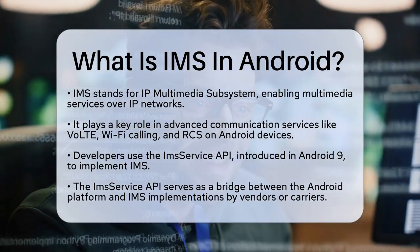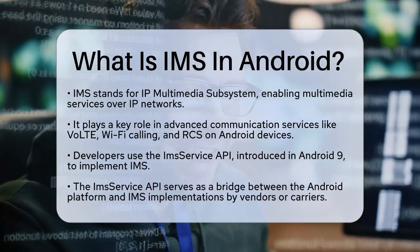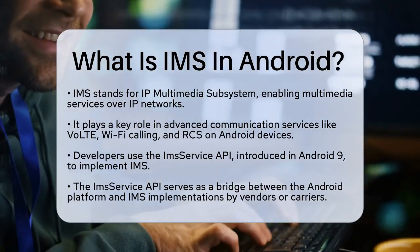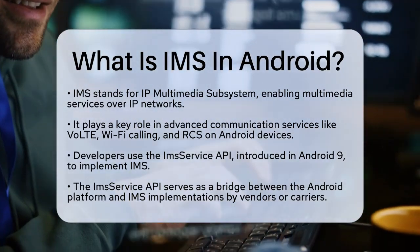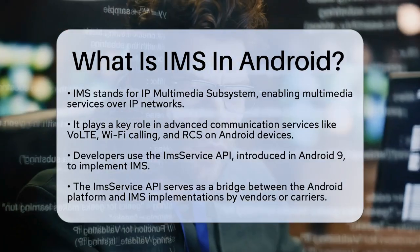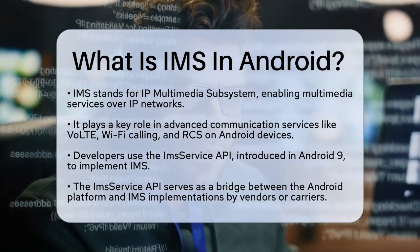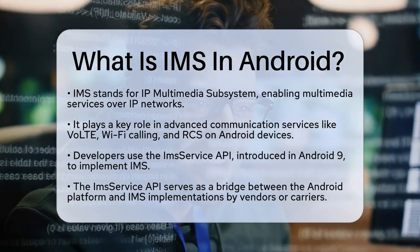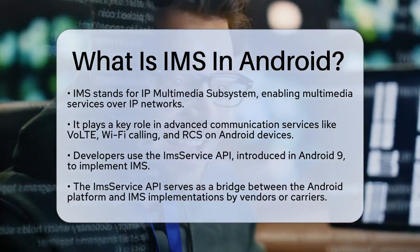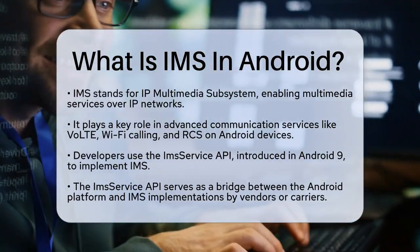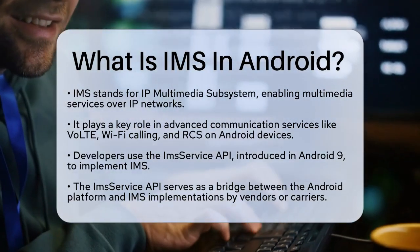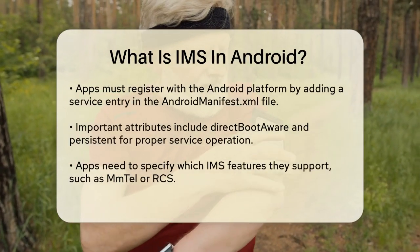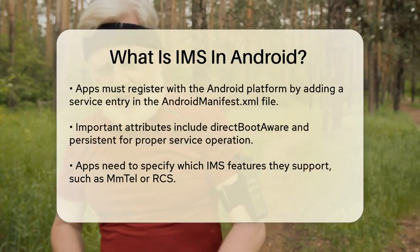To implement IMS on Android, developers use the ImsService API, introduced in Android 9. This API acts as a well-defined interface between the Android platform and the IMS implementation provided by vendors or carriers. It allows the IMS implementer to provide important signaling information, such as IMS registration, SMS over IMS integration, and MMTEL feature integration for voice and video calling.